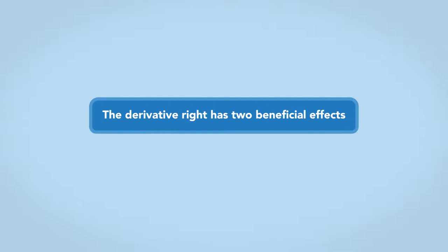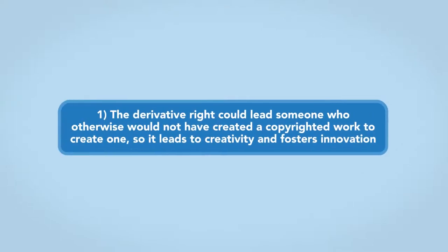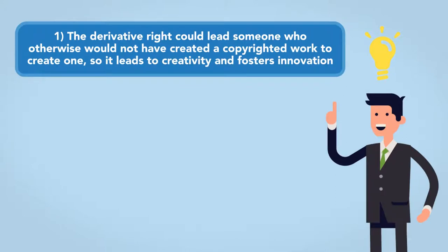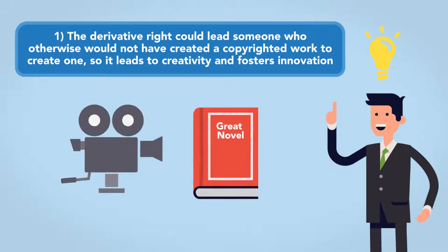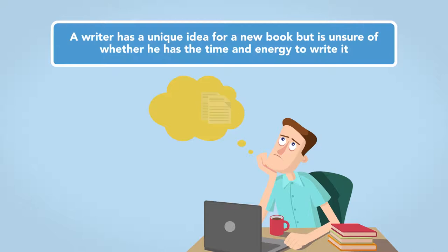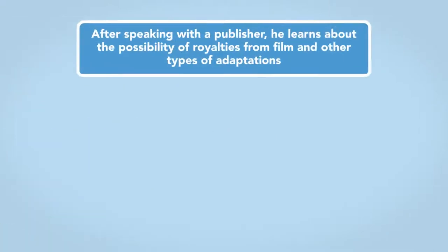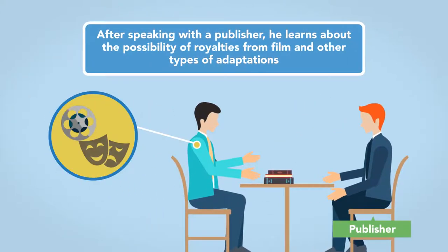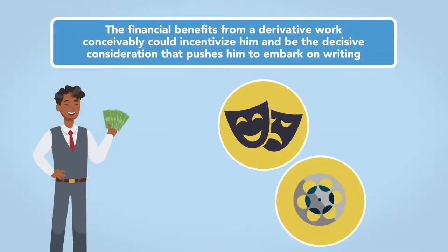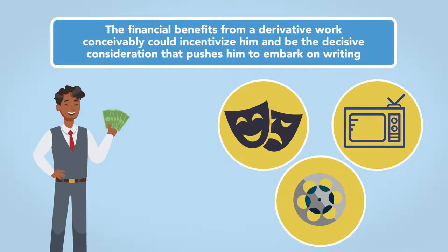The derivative right has two beneficial effects. First, the derivative right could lead someone who otherwise would not have created a copyrighted work to create one, so it leads to creativity and fosters innovation. For example, a writer has a unique idea for a new book but is unsure of whether he has the time and energy to write it. After speaking with a publisher, he learns about the possibility of royalties from film and other types of adaptations. The financial benefits from a derivative work could conceivably incentivize him and be the decisive consideration that pushes him to embark on writing.